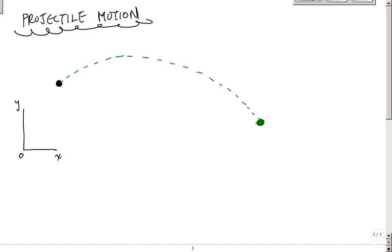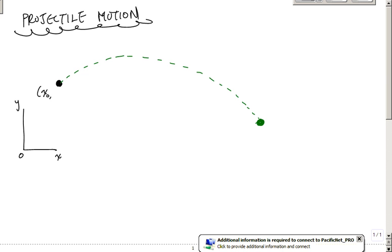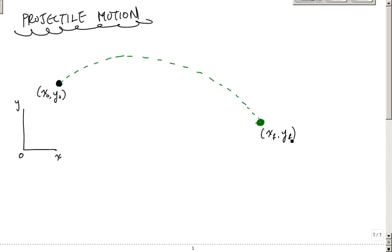We have also a velocity, an initial velocity. Let's define its initial position, we'll call this X0, Y0, and then we'll have a final position, XF, YF. Its final position could be anywhere, it doesn't matter where the ground is or anything like that. You want to define everything according to its X and Y components.